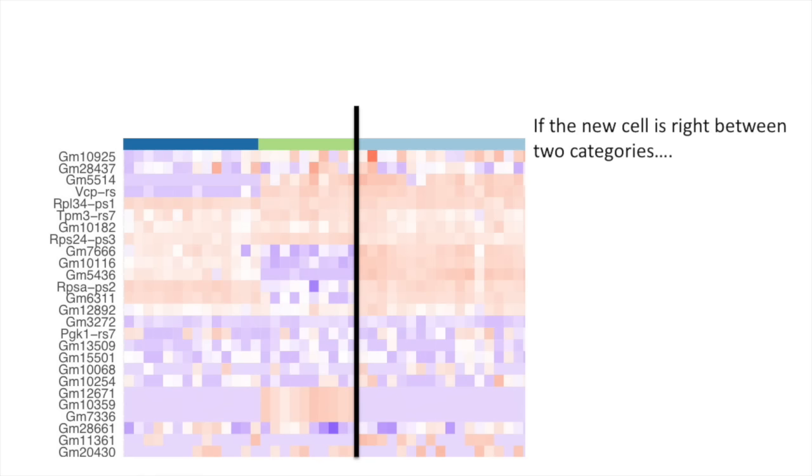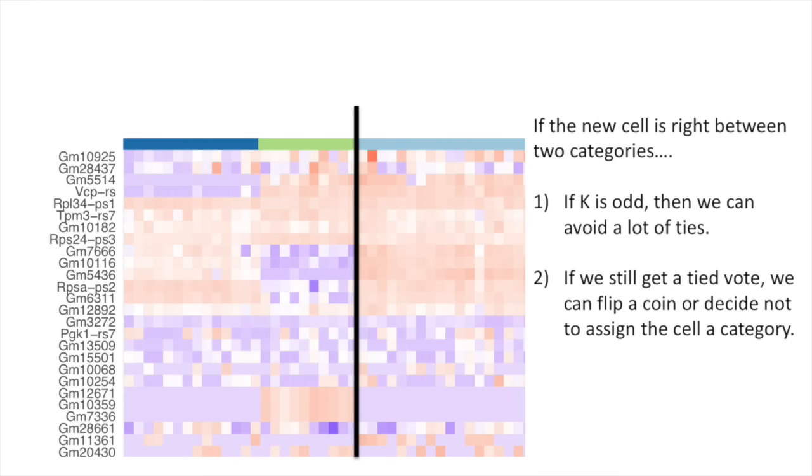If the new cell is right between two categories, well, if K is odd, then we can avoid a lot of ties. If we still get a tied vote, we can flip a coin or decide not to assign the cell to a category.